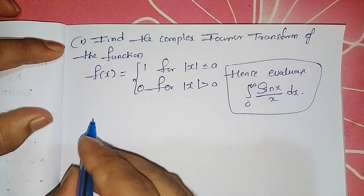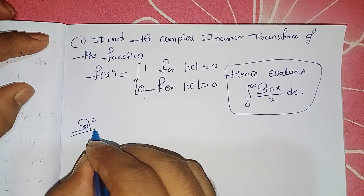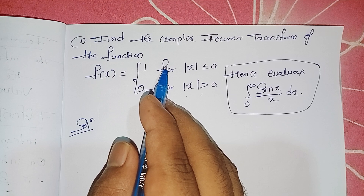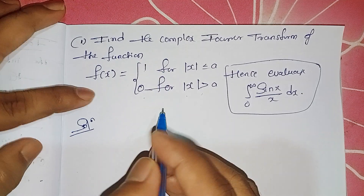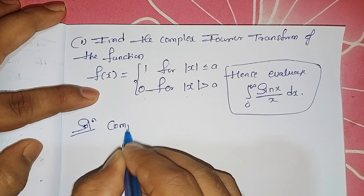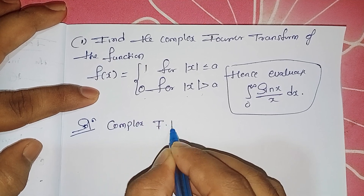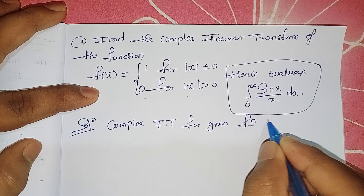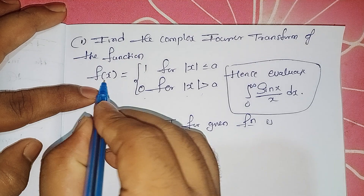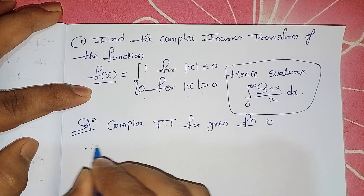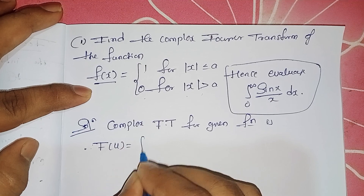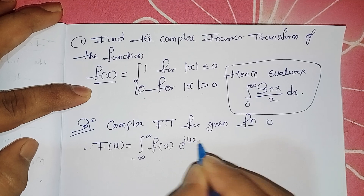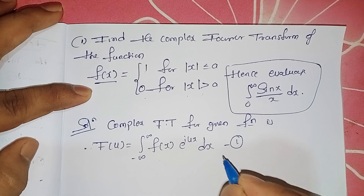Let me proceed to the solution. Whenever a problem is given, the first thing you are supposed to do is write the formula — usually the formula earns one mark. The formula for the complex Fourier transform for the given function is: F(u) = integral from minus infinity to plus infinity of f(x) times e^(iux) dx. Call this equation (1).